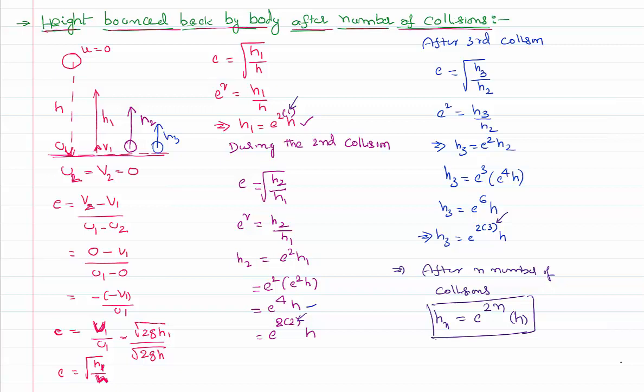Of course, we are assuming this collision is not a perfect elastic collision and the e value is less than 1. If the collision is a perfect elastic collision, there is no loss of energy. Therefore, the height bounced back by the body in each case is equal to the height from where it has fallen. There is no difference at all — every time the ball bounced back to its original height itself, because there is no loss of energy in that case.